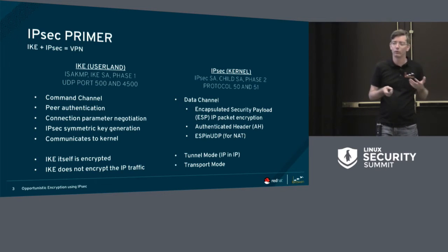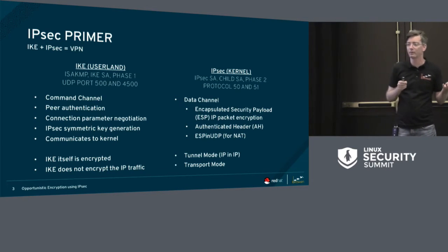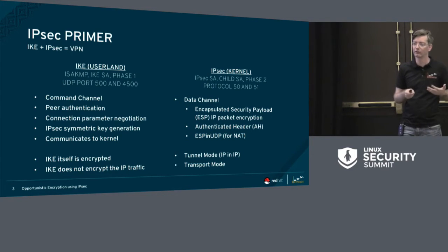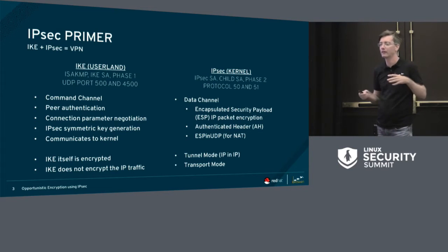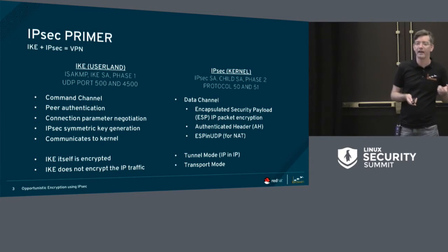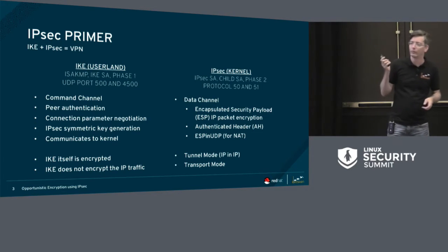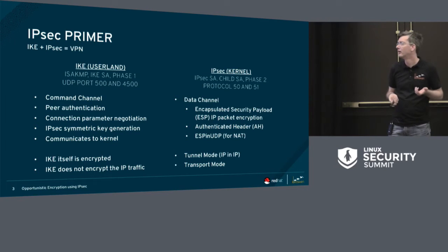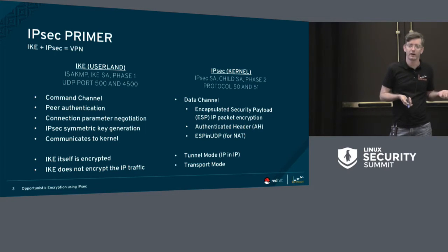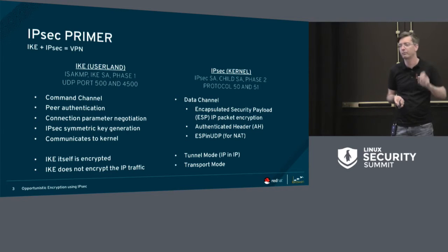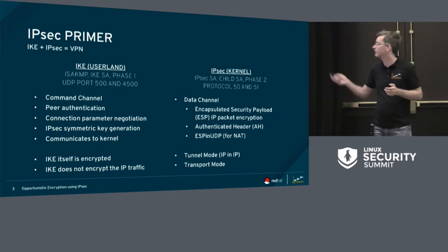There are two modes: tunnel mode and transport mode. Transport mode was the simple one where you yourself are the source IP, so you can encrypt the packet without encapsulation. But because we invented NAT, we sort of destroyed that usability. So tunnel mode is the much more preferred option these days. Also, because many firewall administrators block anything that's not TCP or UDP, they sometimes block the ESP protocol — protocol 50. So there's also a mode for when you're behind NAT: encapsulating into UDP packets, literally prepending four zeros to mark it. That's ESP over UDP.